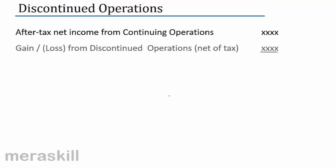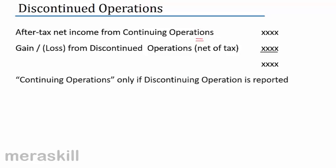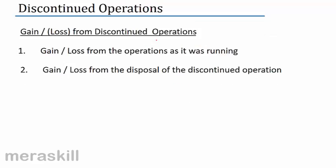After-tax net income from continuing operations — we already got net income. Then we find out the gain or loss from discontinued operations and disclose it separately. This is relevant only if there are discontinuing operations. This gain or loss consists of two parts: one is the gain or loss as the operation was running for that period, and the other is the gain or loss from its disposal. Both are net of tax.